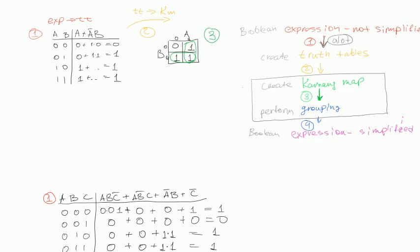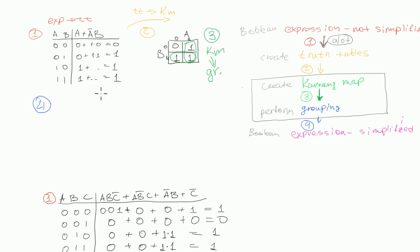So, what we did in the previous video was perform the grouping techniques in order to get groups out of the Karnaugh map. And what we are going to do now is get a simplified expression out of each group.